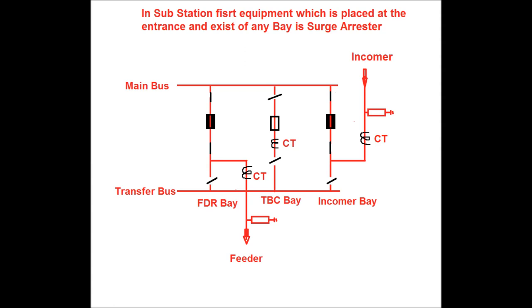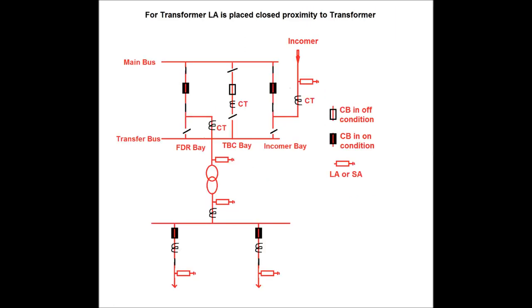In this diagram you can see the first equipment for each incomer — before the CT, the LA is placed in order to protect surges from entering the substation. Again, for the feeder, that is the outgoing feeder, LA is placed at the exit, that is at the beginning of the feeder. The reason is the same: to protect any surge from entering through the feeder into the substation.